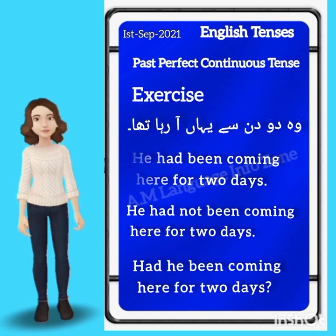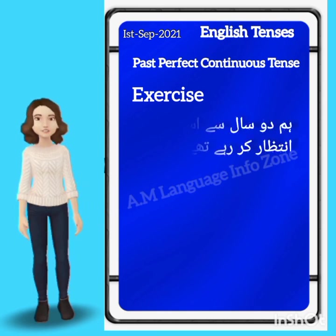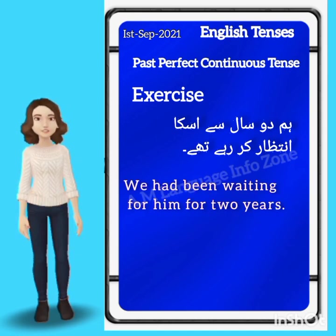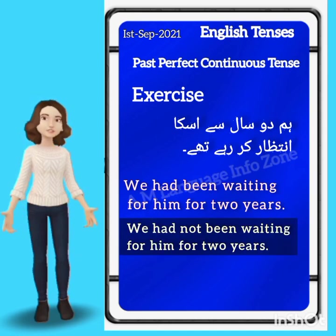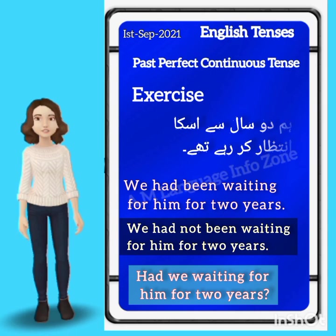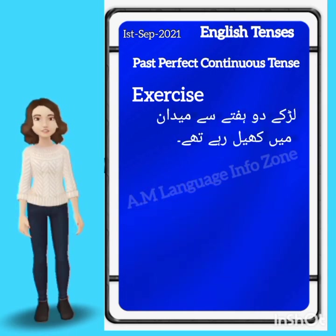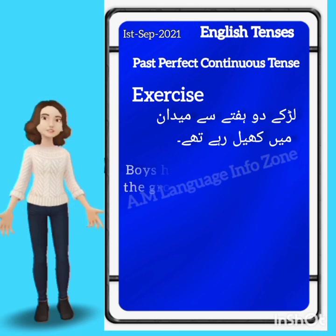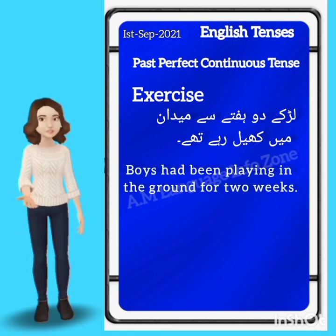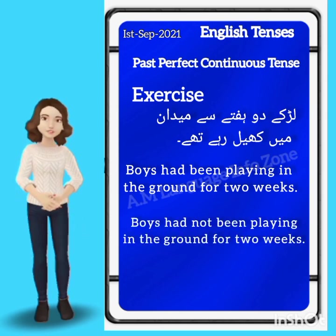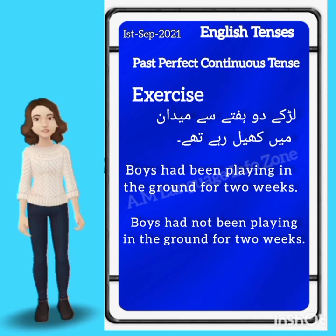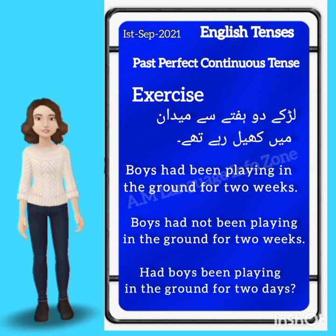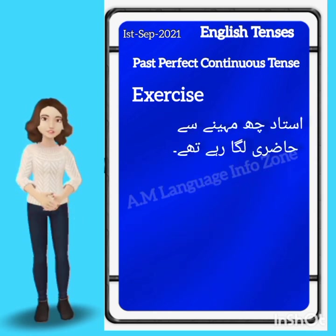More 'for' sentences: 'We had been waiting for him for two years.' Negative: 'We had not been waiting for him for two years.' Interrogative: 'Had we been waiting for him for two years?' Further practice: 'Boys had been playing in the ground for two weeks.' Negative: 'Boys had not been playing in the ground for two weeks.' Interrogative: 'Had boys been playing in the ground for two weeks?'